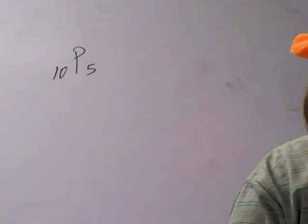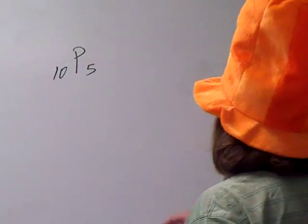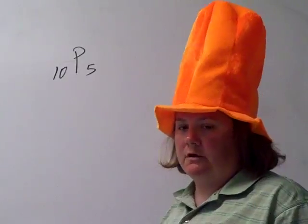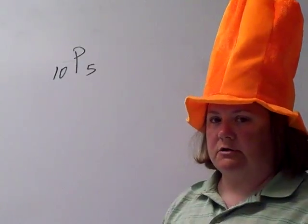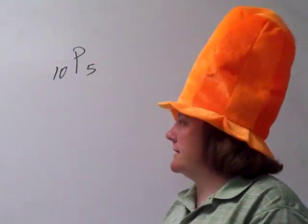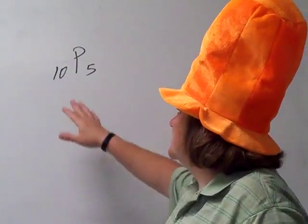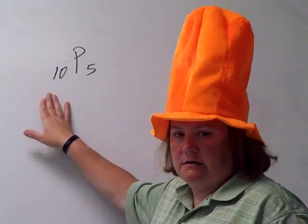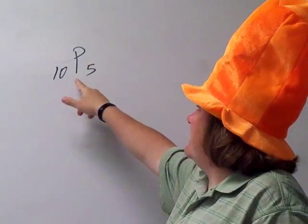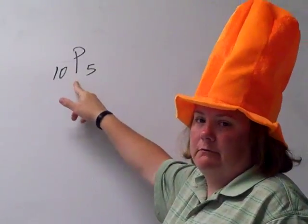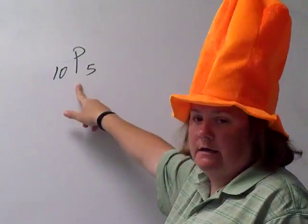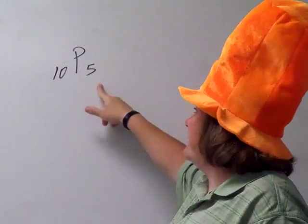Since it's got the P, this is permutations. You could use your formula, but I just took a shortcut this morning and typed it in my calculator on my home screen. I hit 10, then after that I hit math and moved over to probability and went down to the one with P in it. Then I hit 5.